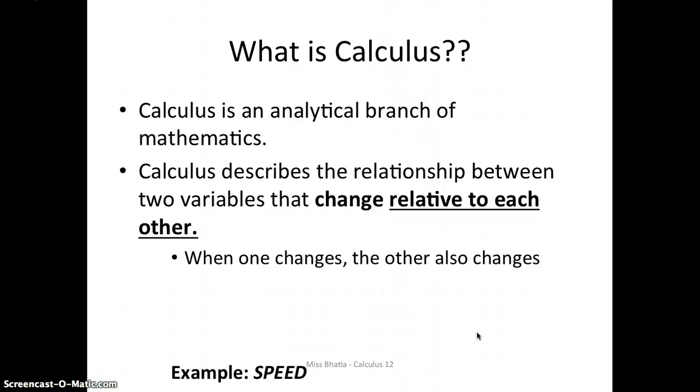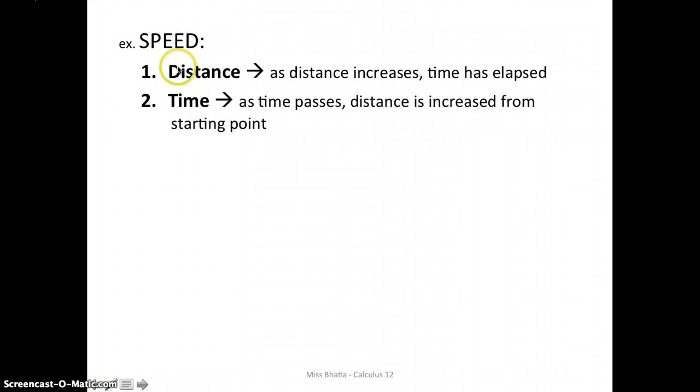So an example of this would be speed. Now speed uses two variables. We have distance and we have time. Distance, as we increase in distance, time has passed. And as time passes, distance is increased from our starting point. Now if we put this in units, we have our distance, kilometers over our time, hours. So kilometers per hour is usually a very good, very general units for measuring speed.